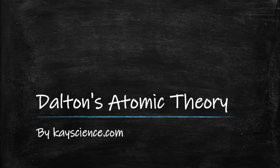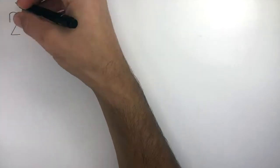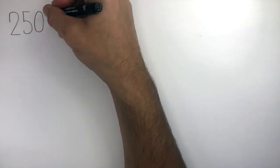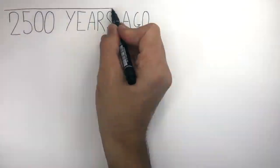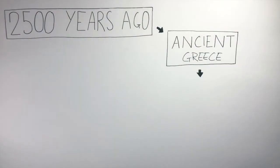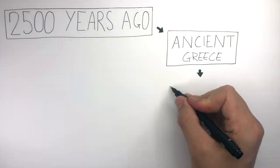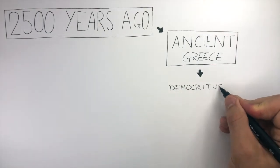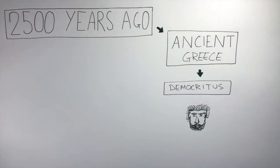Dalton's Atomic Model by KScience.com. 2,500 years ago, in ancient Greece, there was a philosopher called Democritus, and he was famous for coming up with the first atomic theory.